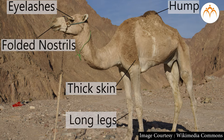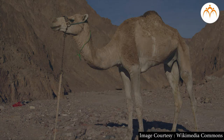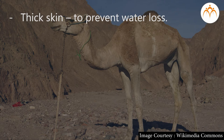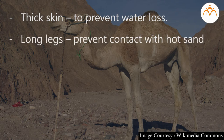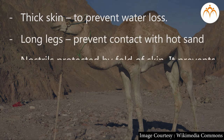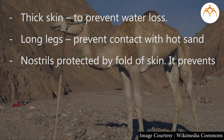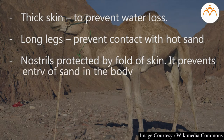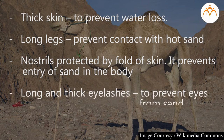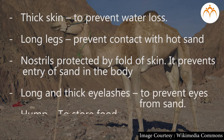These features help camel to survive in deserts. Let us see how. Thick skin to prevent water loss. Long legs prevent major body contact with hot sand. Nostrils are protected by a fold of skin, which prevents entry of sand in the nose. Long and thick eyelashes to protect eyes from sand. Hump to store food. Also, camel can store a lot of water inside the body, and hence can survive without water for many days.